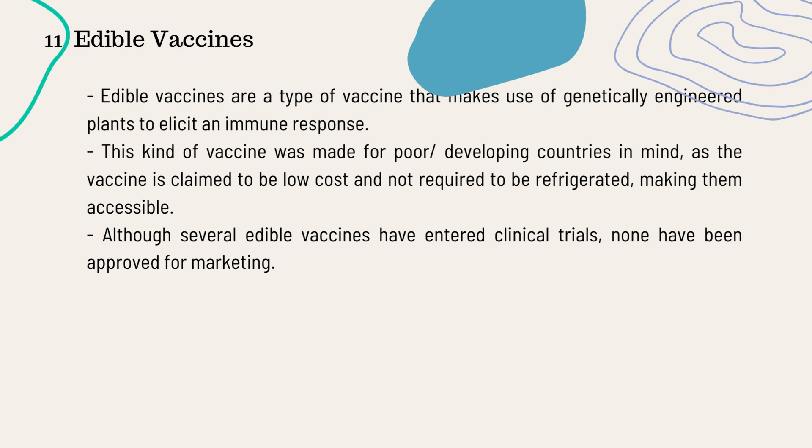The last type of vaccine discussed here is the edible vaccine. It is a relatively new type of vaccine developed with the poor and developing countries in mind. This vaccine is claimed to be low-cost and not requiring refrigeration, meaning it is relatively light on the equipment side. These vaccines make use of genetically engineered plants in order to elicit an immune response. Although several edible vaccines have entered clinical trials, none of them have been approved for marketing yet.